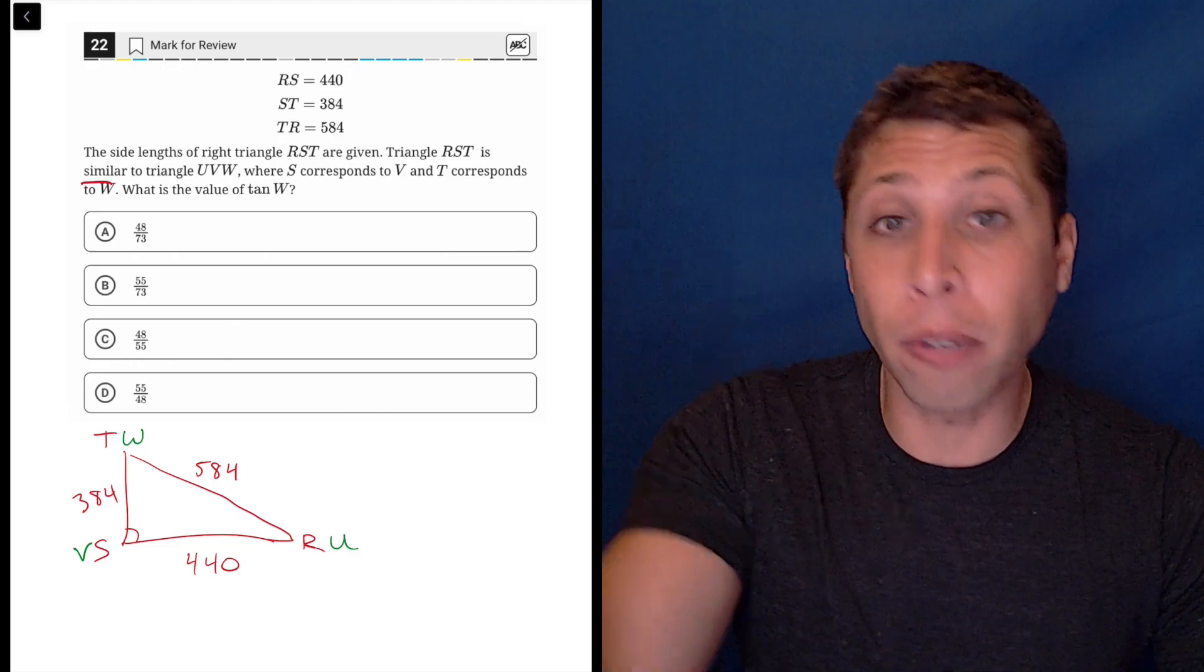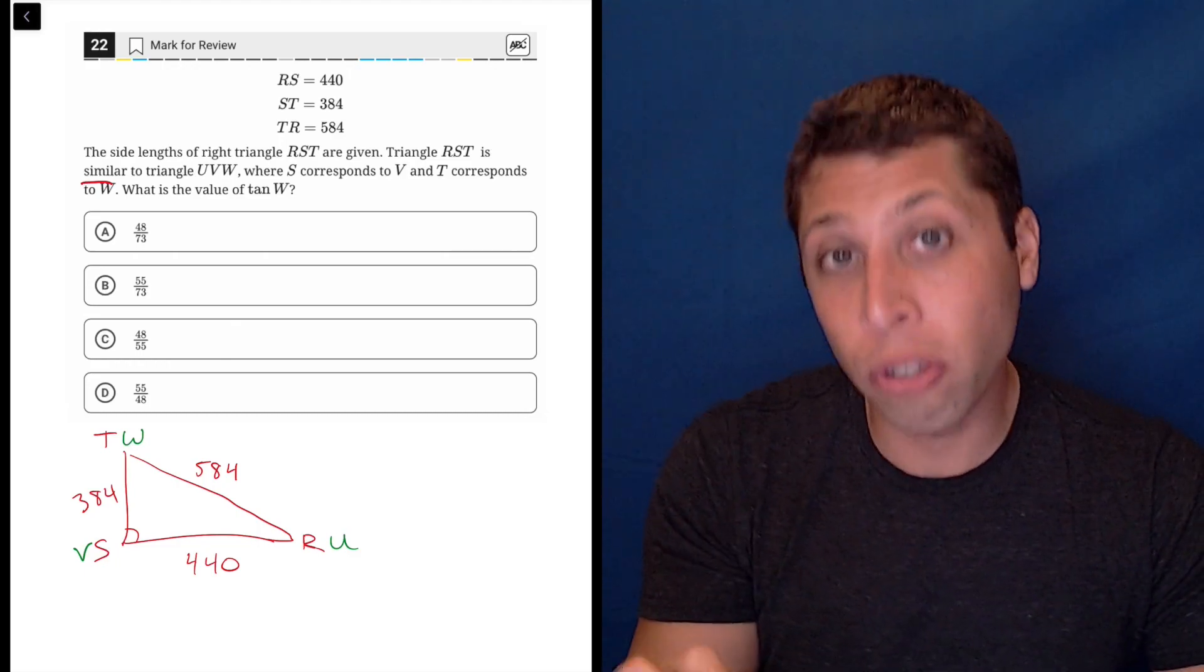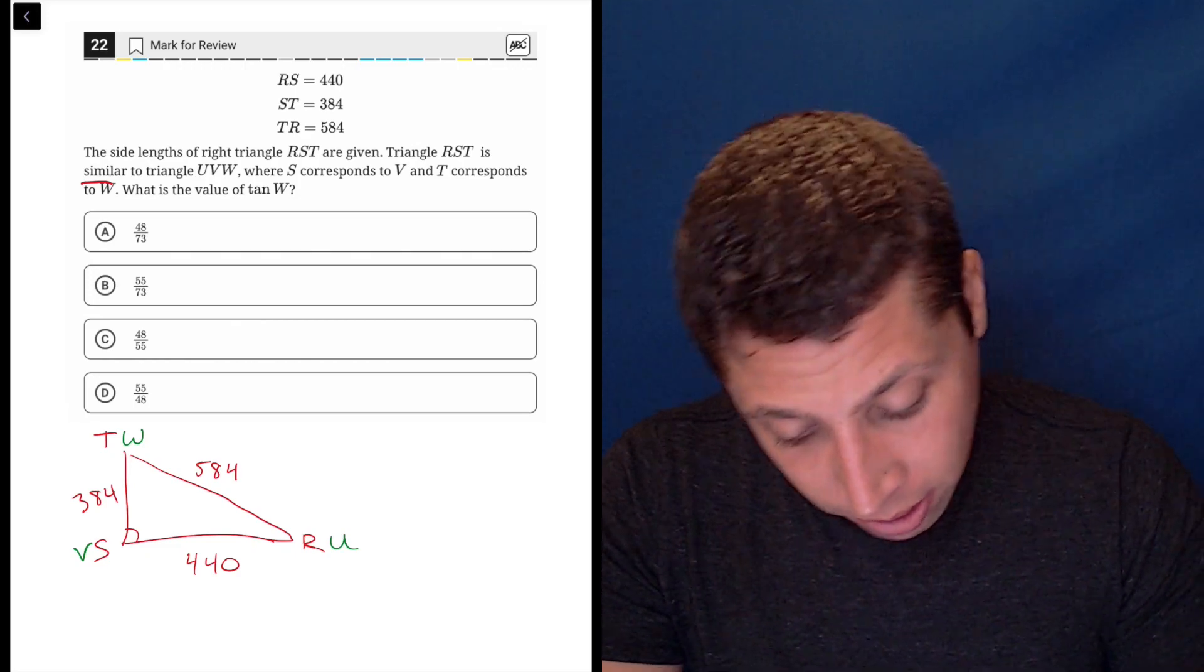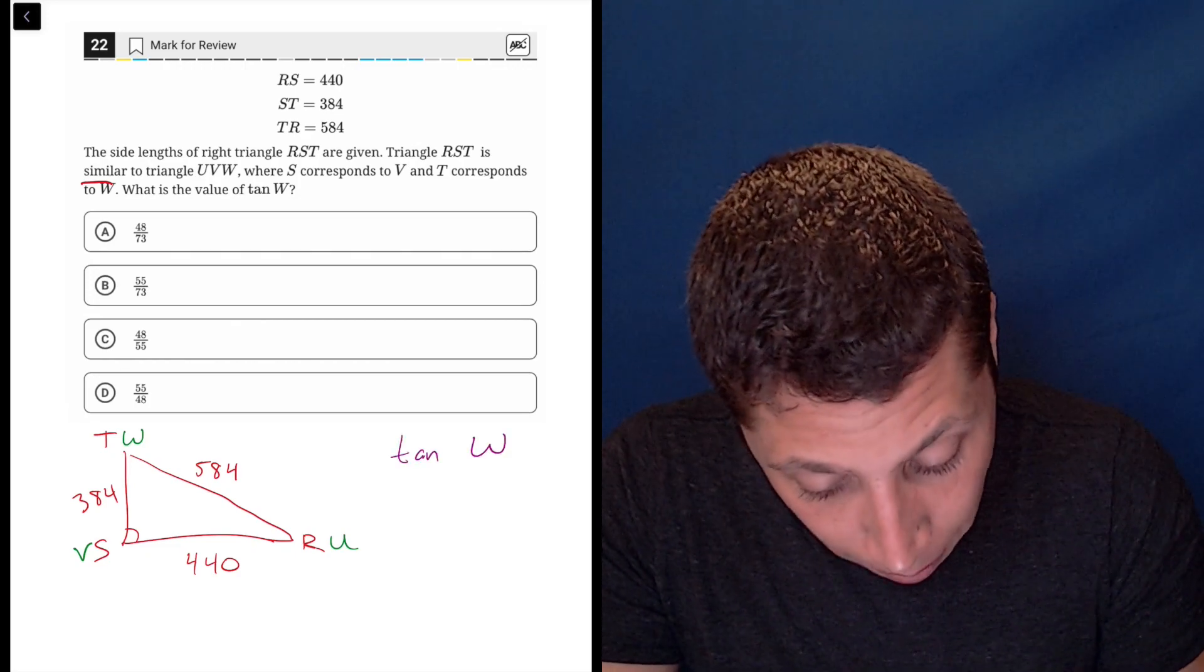And whether the triangle is really big or really small, the fraction is going to reduce to the exact same thing. So we can use the values that they gave us here. They want us to get the tan of W.